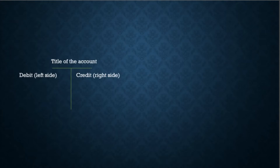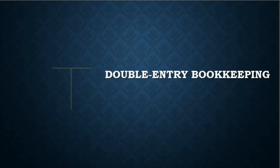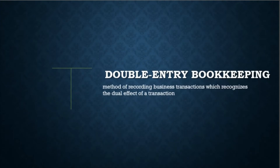As discussed previously, each transaction must affect two or more accounts to keep the accounting equation balanced. In other words, for each transaction, debits must equal credits. The equality of debits and credits provides the basis for the double-entry system of recording transactions. Double-entry bookkeeping is a method of recording business transactions which recognizes the dual effect of a transaction — for every value received, there is a corresponding value given up.